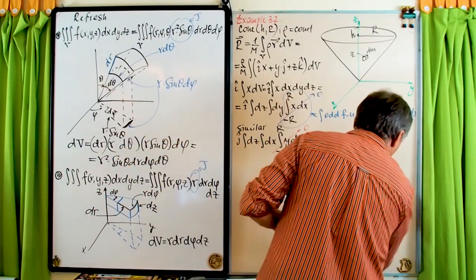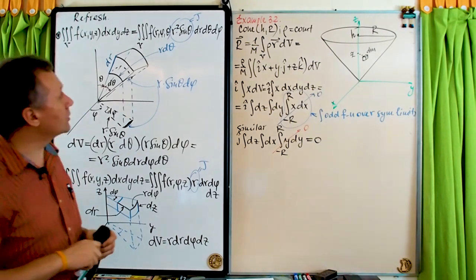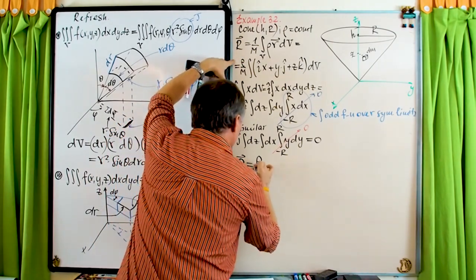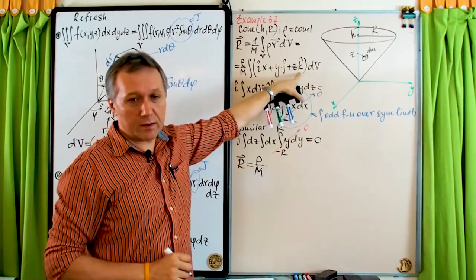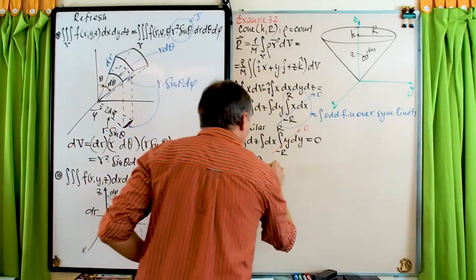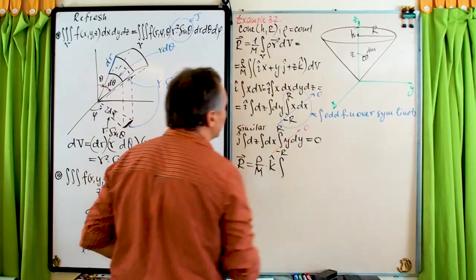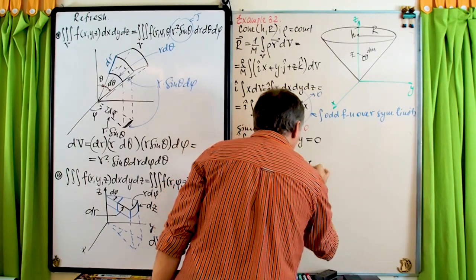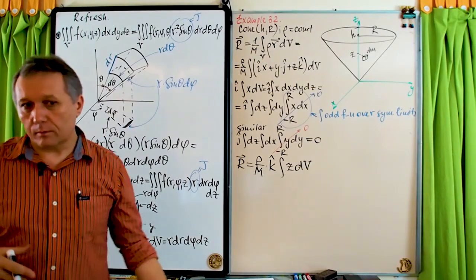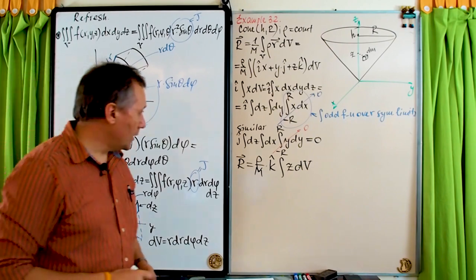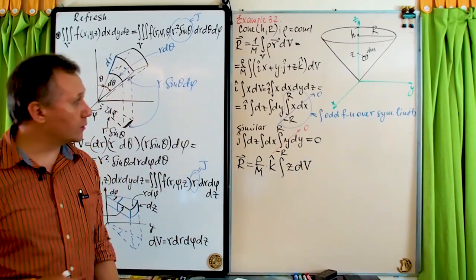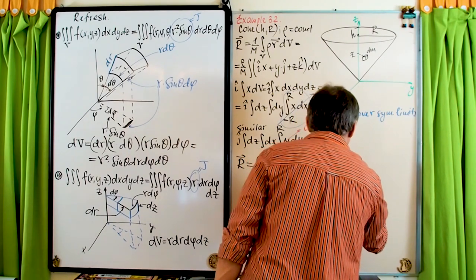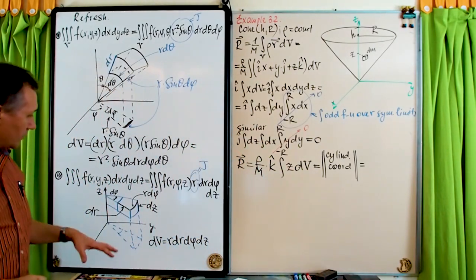Up to this point, the whole class has been about how to find the center of mass. We still don't know what the fuss is — does it make sense to spend so much time on this point? Now it's time to see the beauties of the center of mass: all the simplifications and amazing properties. Let's label it: Beauties of Having a Center of Mass.